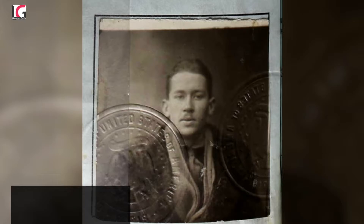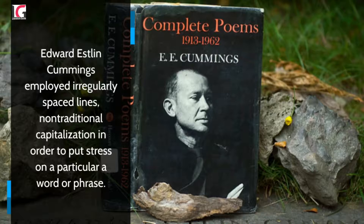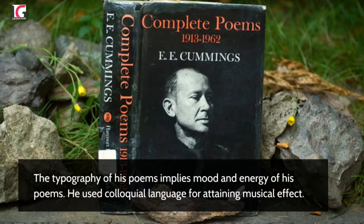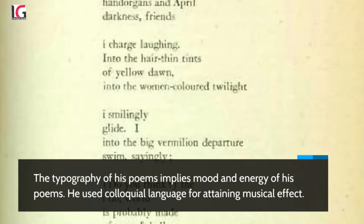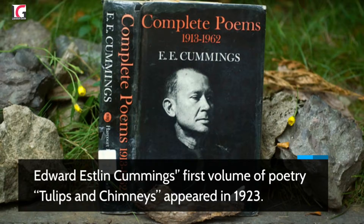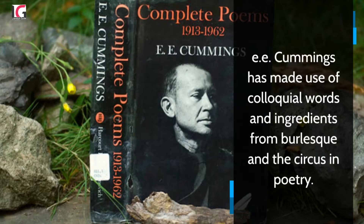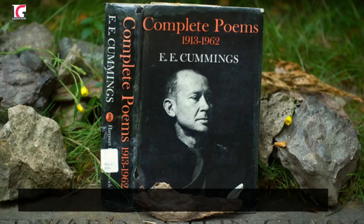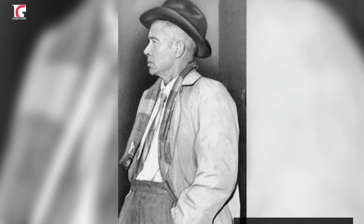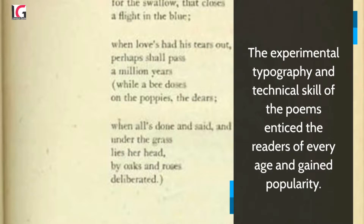Edward Estlin Cummings employed irregularly spaced lines and non-traditional capitalization in order to put stress on a particular word or phrase. The typography of his poems implies the mood and energy of his work. He used colloquial language for attaining musical effect. His first volume of poetry, Tulips and Chimneys, appeared in 1923. Cummings made use of colloquial words and ingredients from burlesque and the circus. His love lyrics and erotic poems appeal both to the heart and head of the readers, and his experimental typography and technical skill gained popularity.